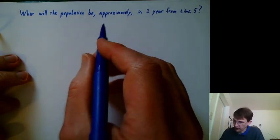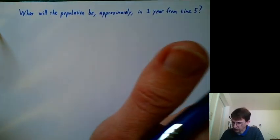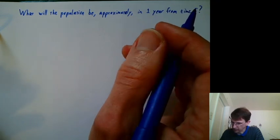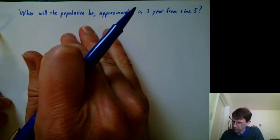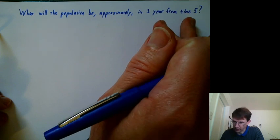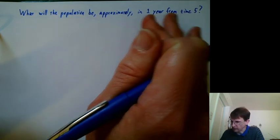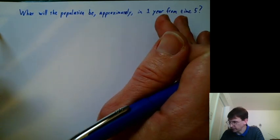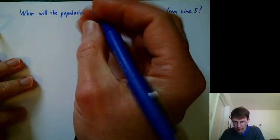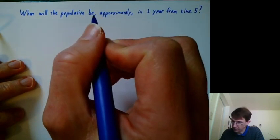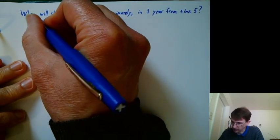All right, our next question is, still using x cubed as our kind of approximate or simplified population function, what will the population be in one year from time 5? And of course we could just plug in f at time 6 and get an answer, but life is more interesting if we pretend we don't know the formula for f.